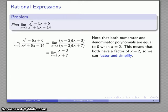And here we can do what we've always wanted to do. We can cancel out our common factor of x minus 2, and we just have x minus 3 over x plus 7.